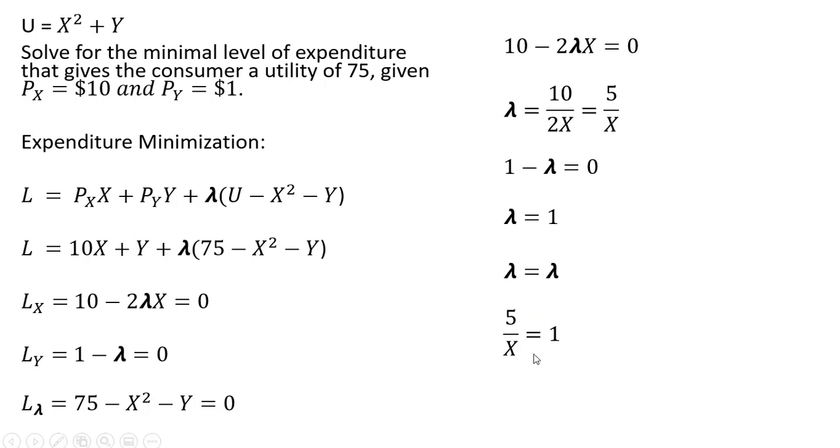Setting our lambda equations equal and solving for x, x equals 5. Now we'll take this x equals 5 and plug it into our third partial derivative result. Here's our third partial derivative which is just the constraint.